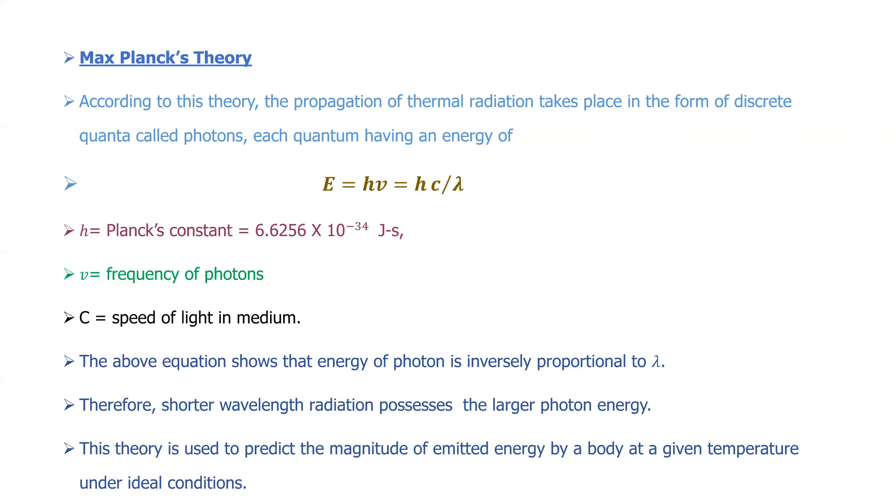The second theory is Max Planck's theory. According to this theory, the propagation of thermal radiation takes place in the form of discrete quanta known as photons, each quanta having an energy of E equal to H nu. We have just defined that H equals C by nu, so from here we can calculate the value of nu. Nu will be given by C by lambda, where C is the speed of light and H is the Planck's constant with value equal to 6.6256 times 10 raised to the power minus 34 joule seconds.